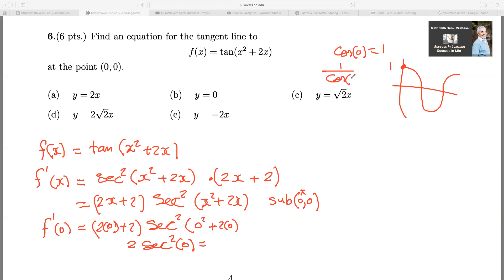And secant is the same as 1 over cos. That's what secant does. So 1 over cos 0, which is 1 over 1, which gives you 1. That's what secant is. So it gives me 2. The secant of 0 is 1, and then you square the secant. That's just 2 times 1 squared, which gives you 2.